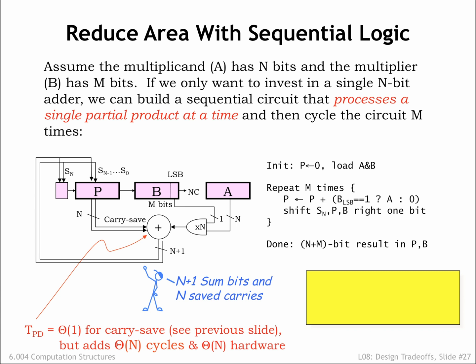After order N steps we've generated the necessary partial products, but we'll need to continue for another order N steps to finish propagating the carries through the carry-save adder. But even at 2N steps the overall latency of the multiplier is still order N, and at the end of 2N steps we produce the answer in the P and B registers combined, so the throughput is order 1 over N. The big change is in the hardware cost at order N, a dramatic improvement over the order N-squared hardware cost of the original combinational multiplier.